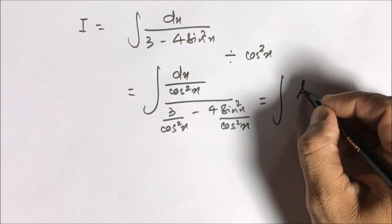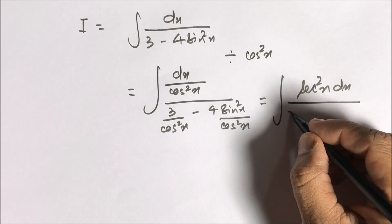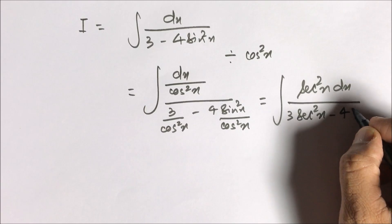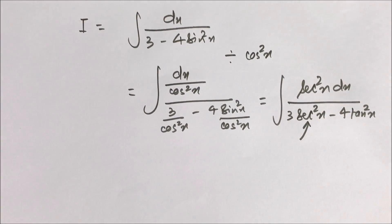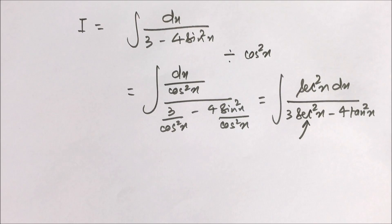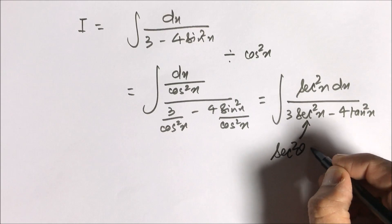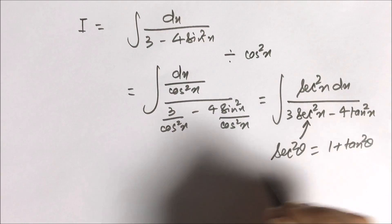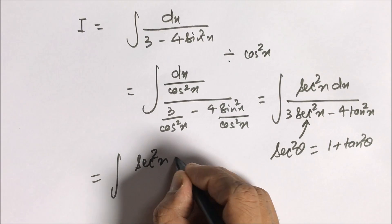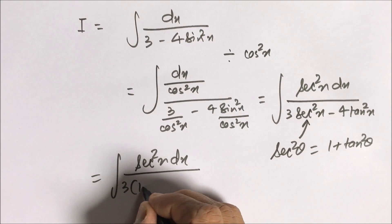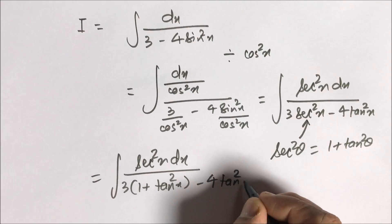The result is the integral of sec²(x) dx over (3sec²(x) − 4tan²(x)). We convert sec²(x) in the denominator using the identity sec²(θ) = 1 + tan²(θ), so the denominator becomes 3(1 + tan²(x)) − 4tan²(x).